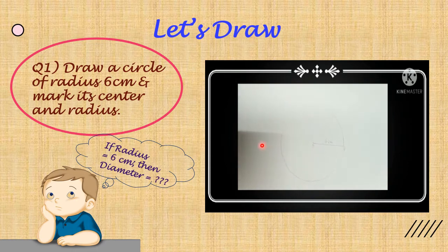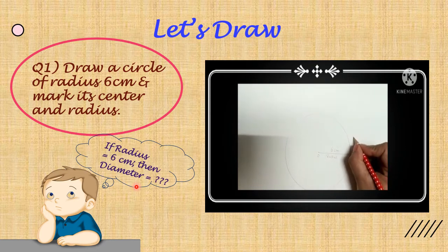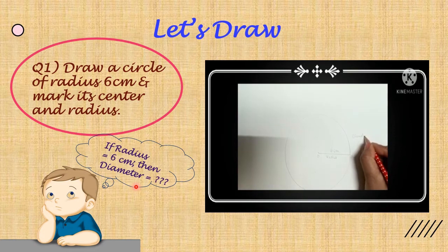Now we have a circle with radius 6 cm. If the radius is 6 cm, then what will be its diameter? Let's see this question in the next segment.